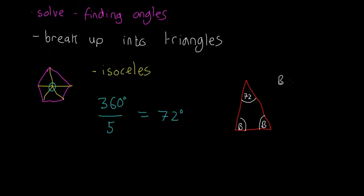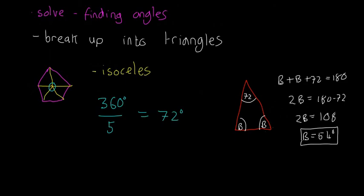We know that B plus B plus 72 is equal to 180. We know they're the same because it's an isosceles triangle, and we know that all the angles have to add up to 180. So 2B is equal to 180 minus 72. That means 2B is equal to 108, and that means that B is equal to 54 degrees.